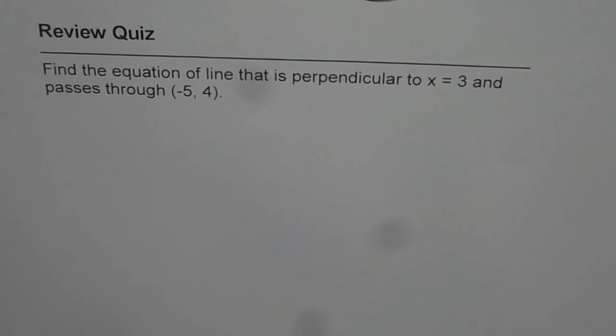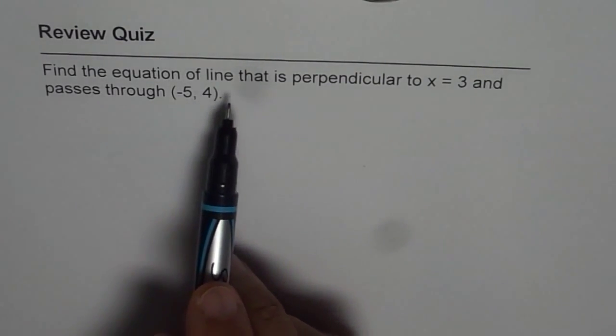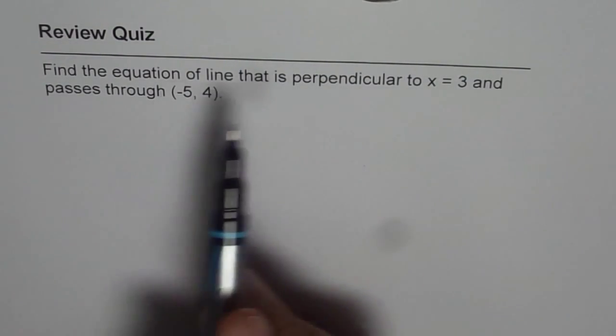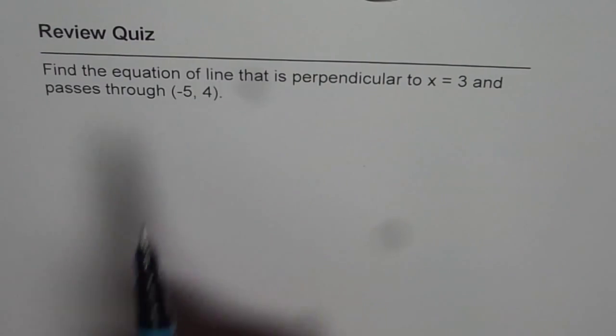Here is a very interesting question. You need to find the equation of a line that is perpendicular to x equals 3 and passes through the point (-5, 4).